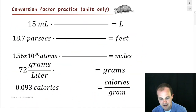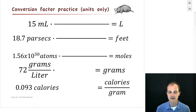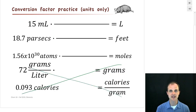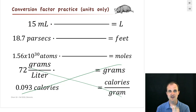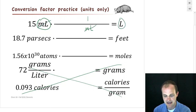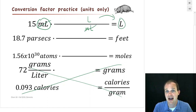Here's some practice just figuring out units on conversion factors. Pause the video and fill in the units for the top three problems — you don't need the numbers, just the units. For the first one: milliliters on top — we want to get rid of milliliters, so milliliters on the bottom, and liters on top. That gives us liters per milliliter.